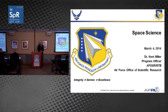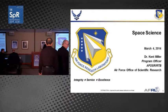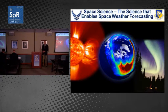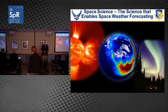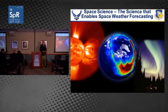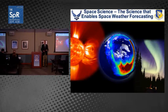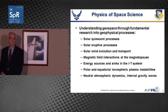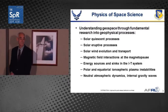I'm Kent Miller. My program is space science. I'd like to start out by defining what I mean by space science, because quite often people think satellites and sensors, and that's not what I do. This is the science of space, the science of the space environment, the science that enables us to forecast space weather. There are many aspects of space science — it covers a big territory, all of what we call geospace.